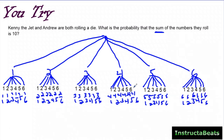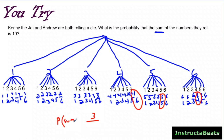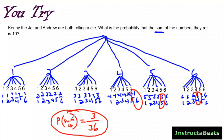Now I can see all my outcomes and I'm looking for the sum of each pair. Rolling from 1 gives sums of 2 through 7 — none equal 10. Rolling from 2 gives sums of 3 through 8 — none equal 10. Rolling from 3 gives sums of 4 through 9 — none equal 10. But rolling from 4, I find 4+6=10. Rolling from 5, I find 5+5=10. And rolling from 6, I find 6+4=10. So there are three outcomes with a sum of 10, out of 36 total possibilities. The probability of rolling a sum of 10 is 3 out of 36.